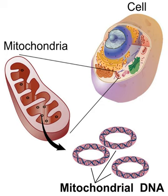In sexual reproduction, mitochondria are normally inherited exclusively from the mother. The mitochondria in mammalian sperm are usually destroyed by the egg cell after fertilization. Also, most mitochondria are present at the base of the sperm's tail, which is used for propelling the sperm cells; sometimes the tail is lost during fertilization. In 1999 it was reported that paternal sperm mitochondria containing mtDNA are marked with ubiquitin to select them for later destruction inside the embryo. Some in vitro fertilization techniques, particularly injecting a sperm into an oocyte, may interfere with this.